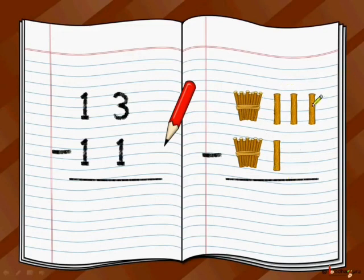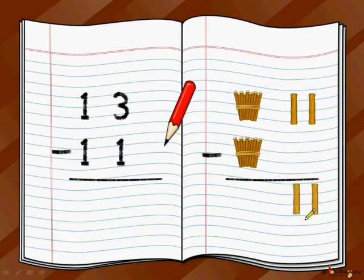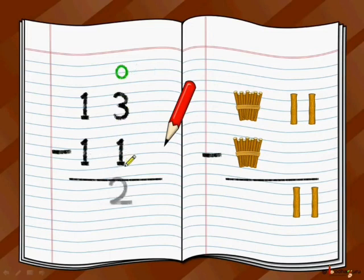As usual, start with the 1s place. So 3 minus 1 — 1 is taken away from 3 and the leftover is 2 sticks. Same way in the numbers, start with the 1s place: it is 3 minus 1. We will do backward count, so it is 2.